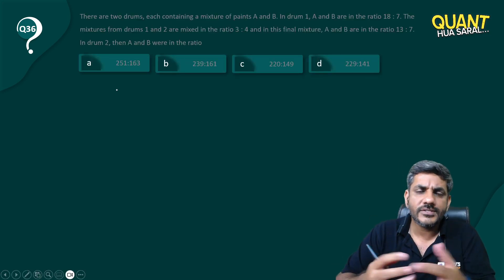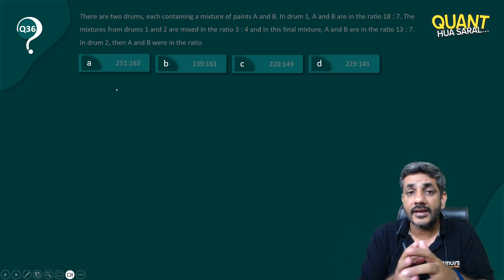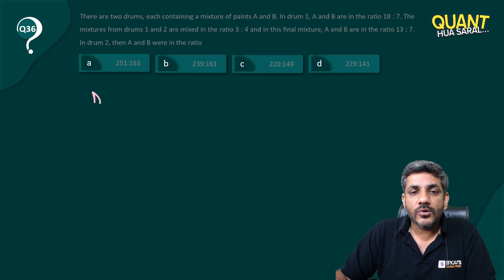Let us start doing it. Though it looks like a question of allegation, looking at the options it looks a little scary because the options are very big, right? So in drum one we have A and B in a ratio